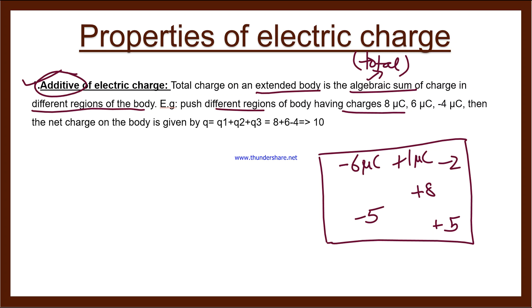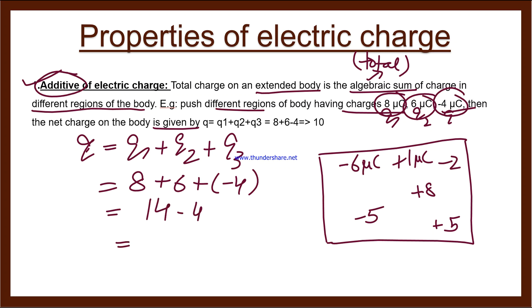If we have 6 microcoulomb, minus 4 microcoulomb, then the net charge on the body is given by adding all the different charges. First let's assume q1 equals 8, q2 equals 6, q3 equals minus 4. How will we add them? q equals q1 plus q2 plus q3. So we consider q1 as 8, next one is plus 6, next is minus 4.